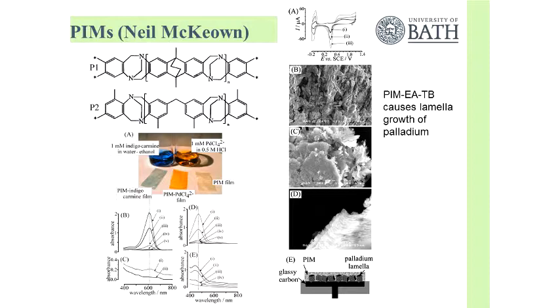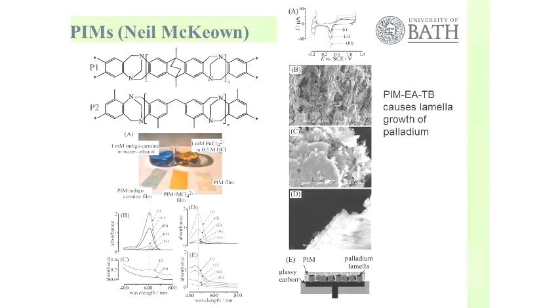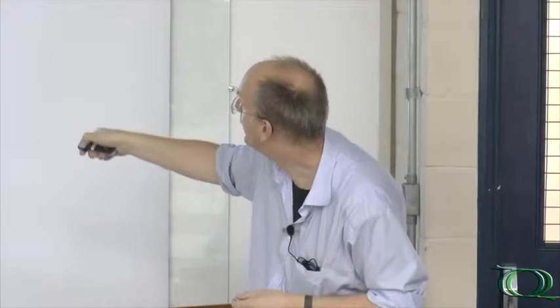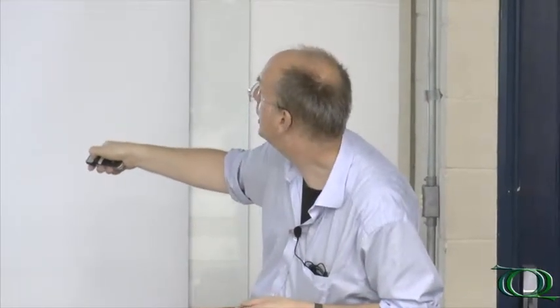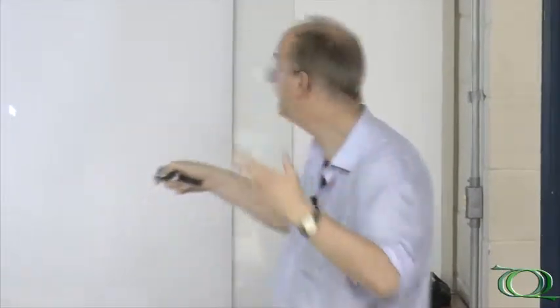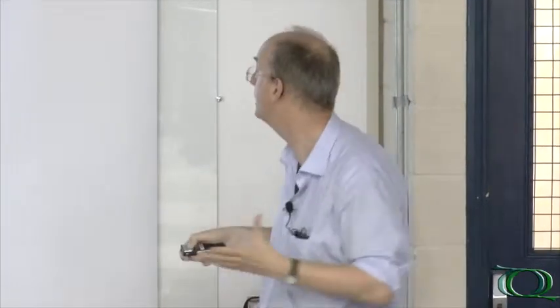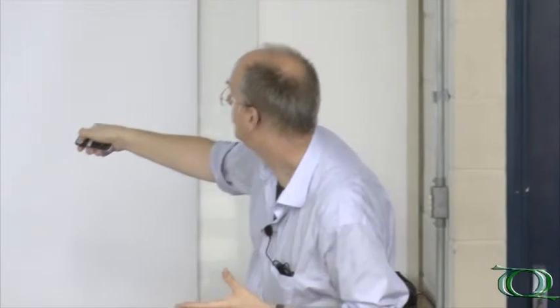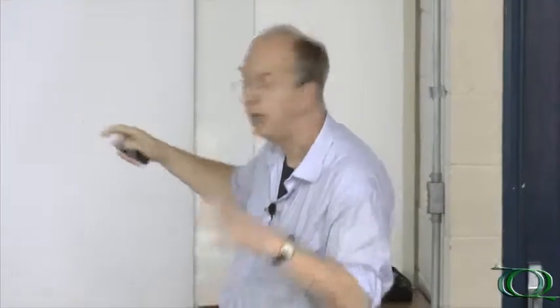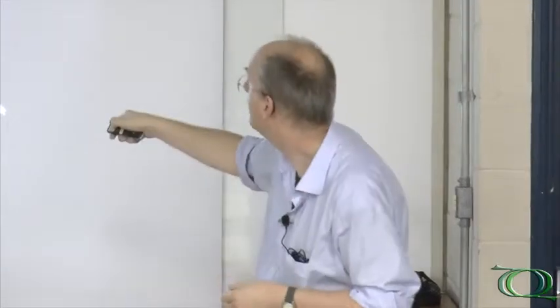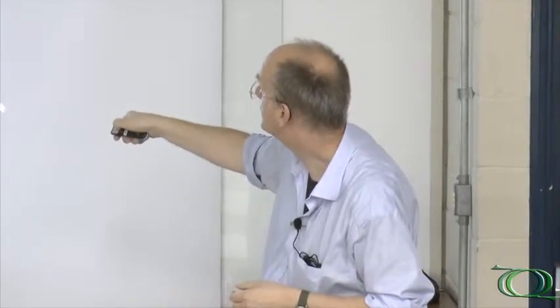We found that, for example, if you have a little bit of acid present, we can absorb anions. This is a photograph. Here this is the polymer without any treatment. This is the polymer with tetrachloropalladate solution. Just soaked. If you soak for 10 minutes, you take the polymer out, it's full of the yellow color. It's the palladium. This is indigo carmine. It's the blue color, an aromatic sulfonated dye.